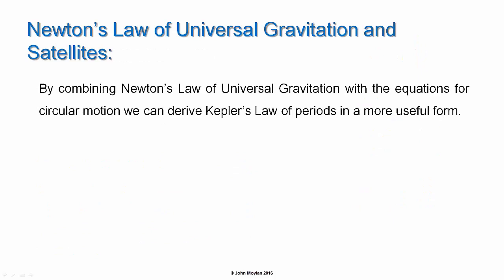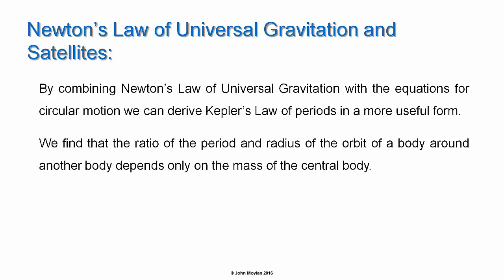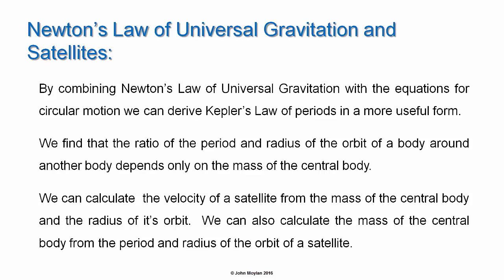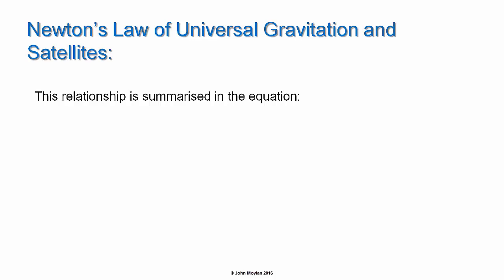Newton's law of universal gravitation and satellites. By combining Newton's law of universal gravitation with the equations for circular motion, we can derive Kepler's law of periods in a more useful form. We find that the ratio of the period and radius of the orbit of a body around another body depends only on the mass of the central body. We can calculate the velocity of a satellite from the mass of the central body and the radius of its orbit, and we can also calculate the mass of the central body from the period and radius of the orbit of a satellite. This relationship is summarized in the equation r cubed on t squared equals capital G capital M on 4 pi squared.